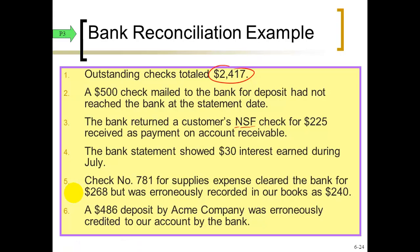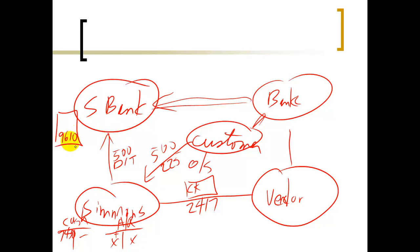Reconciling item four: the bank statement shows $30 of interest earned during July. It's already in the bank statement balance, but we don't know about it until the month is over. On the reconciliation we add it to our book balance, and we journalize it: debit cash and credit interest revenue.